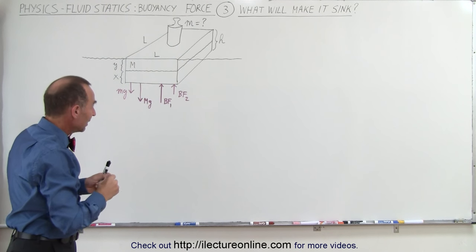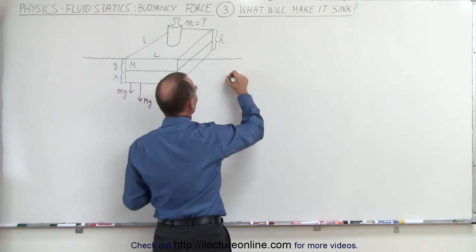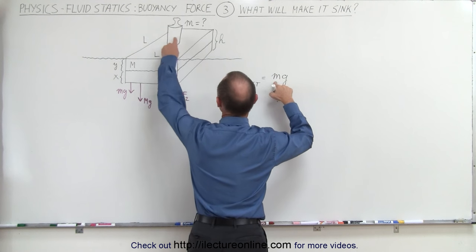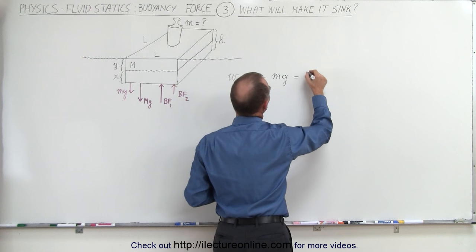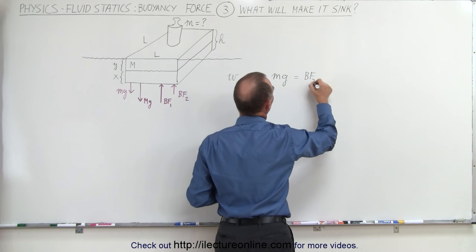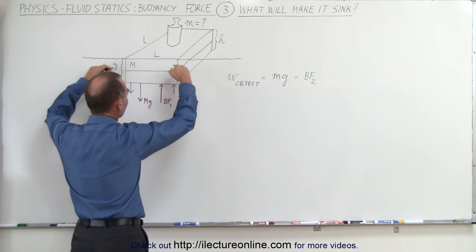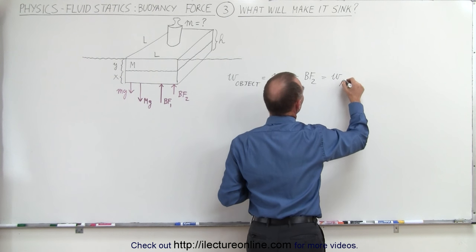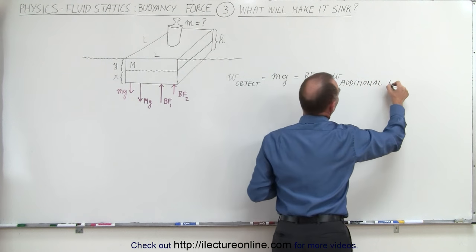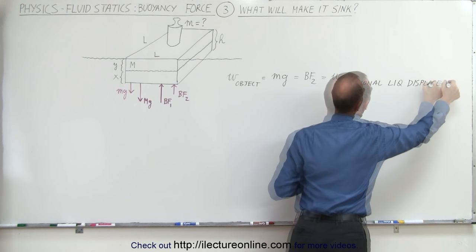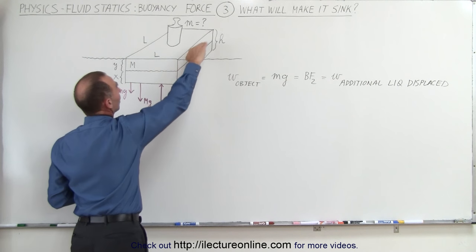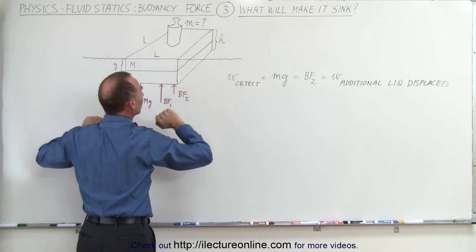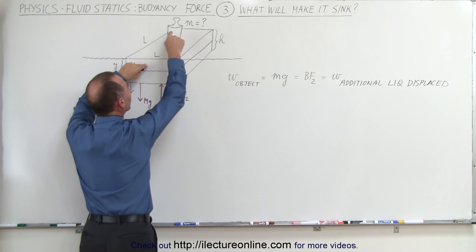We can write that the weight of the object is equal to mg, with small m being the mass of the object, which is equal to buoyancy force 2 — the additional buoyancy force required to keep the whole block from sinking. And we know this is equal to the weight of the additional liquid displaced. The additional liquid displaced equals in volume the top portion of the block.